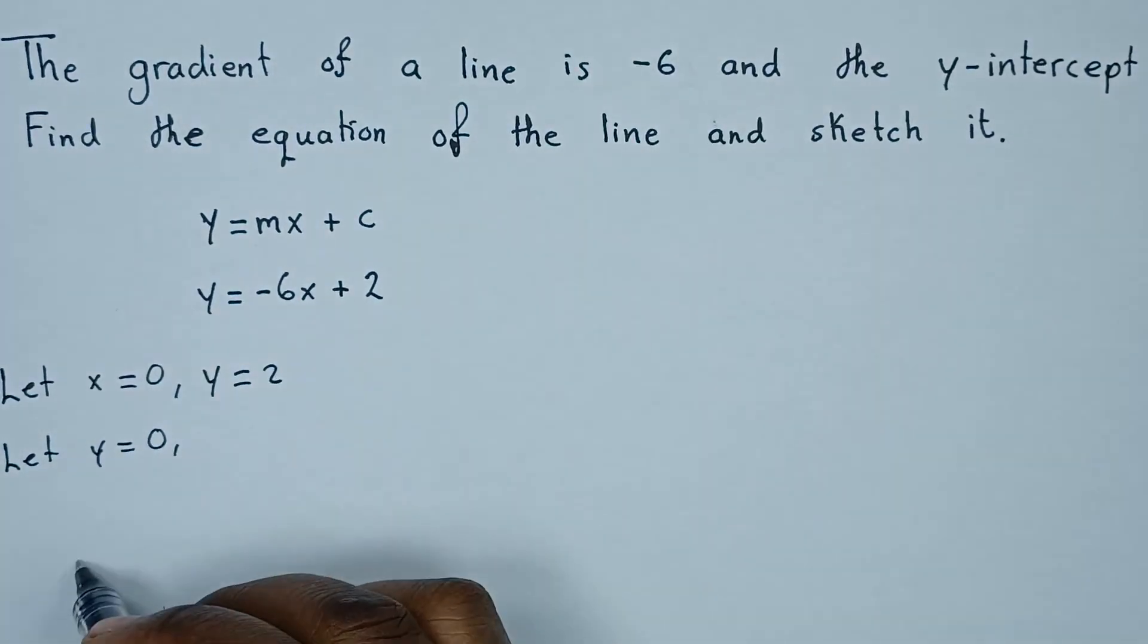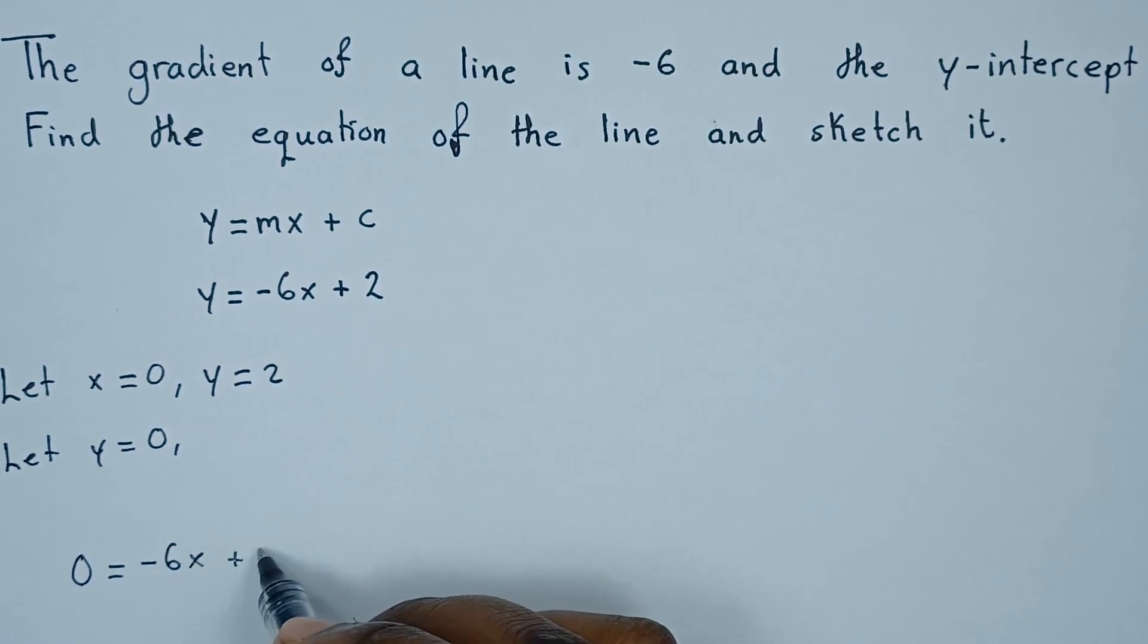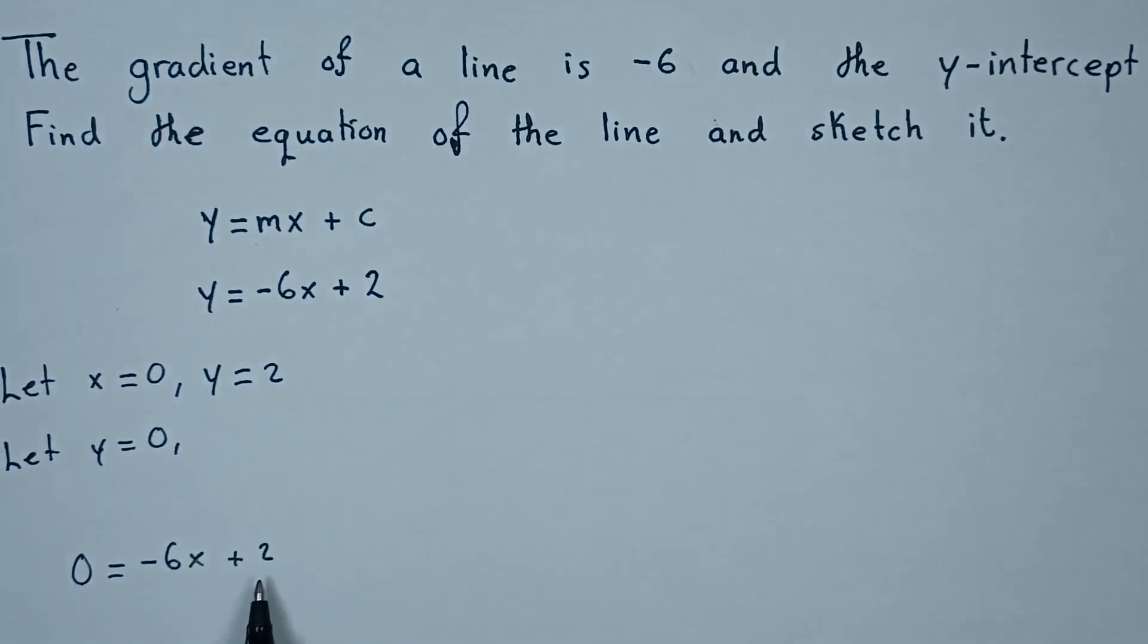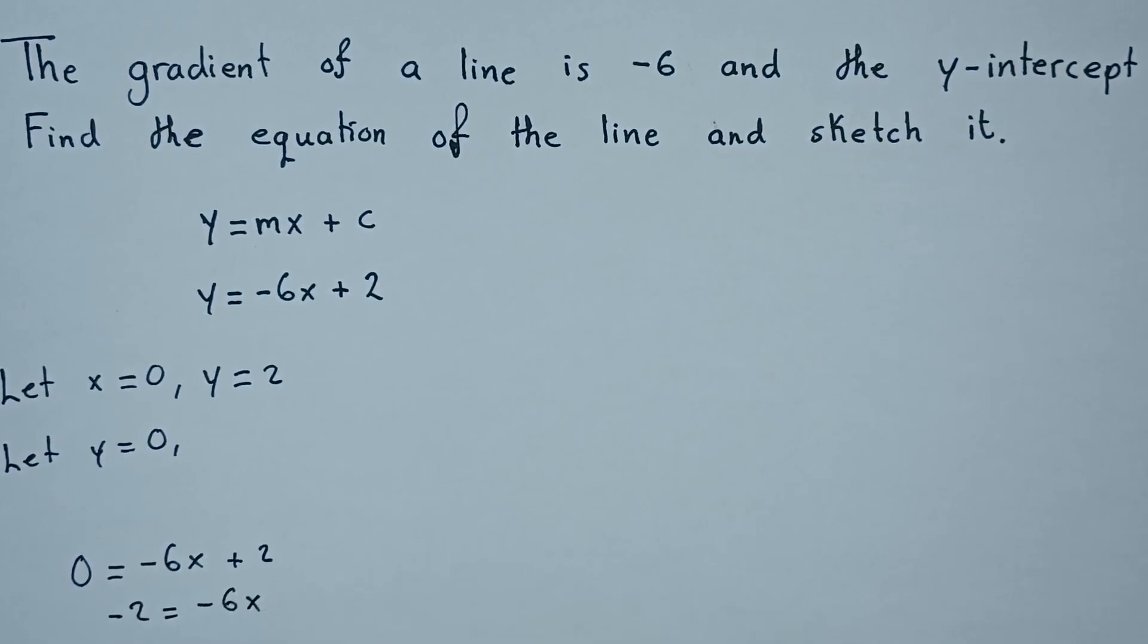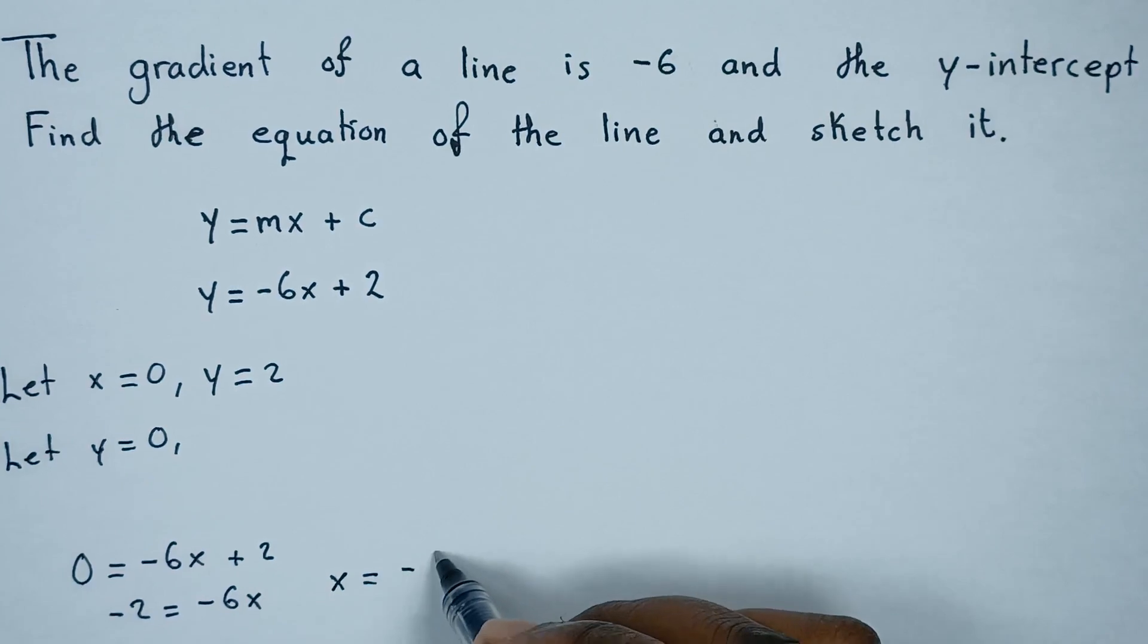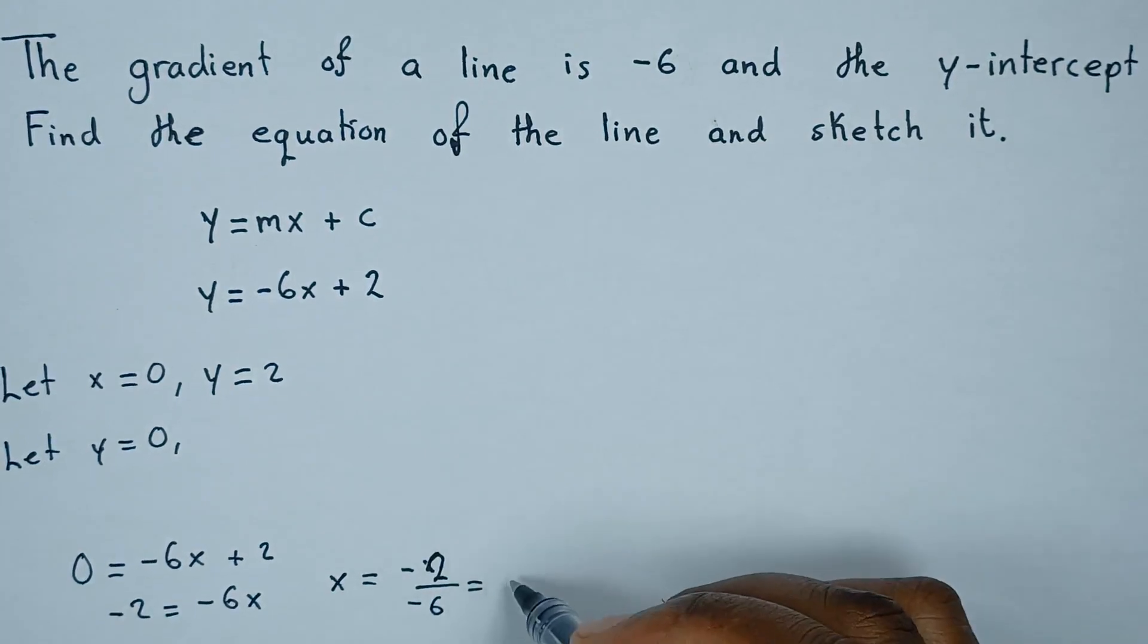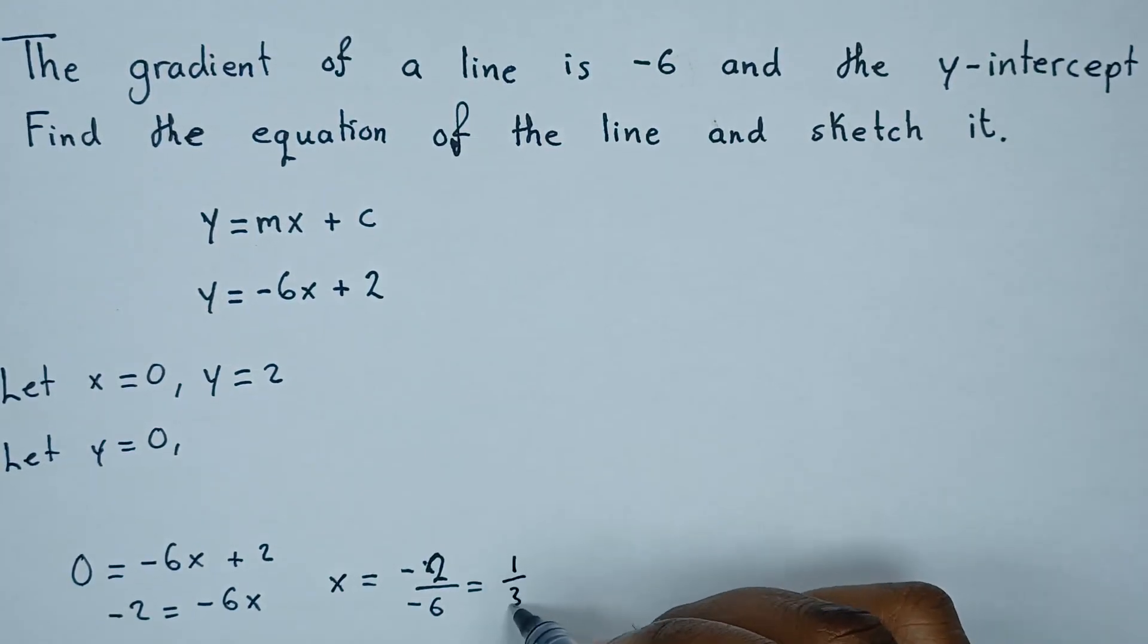So if our y is 0, we'll have 0 equals negative 6x plus 2. These two will cross, hence we'll have negative 2 equals negative 6x. We're going to divide both sides by negative 6, hence we'll see that x equals negative 2 over 6, which we can reduce to 1 over 3.